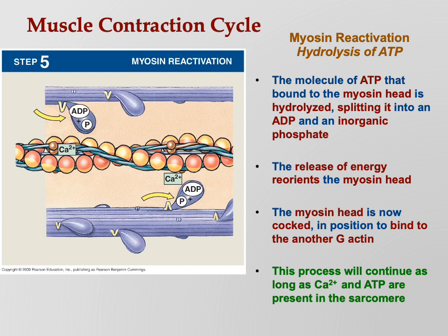Those were the five steps of the muscle contraction cycle - our first venture into actual physiology at the molecular level. We saw how events at the molecular level cause the entire muscle to contract. You need to go back and review those five steps - that's how the whole thing actually happens.